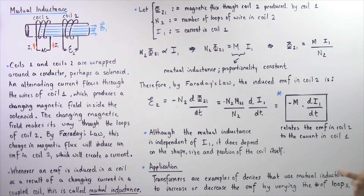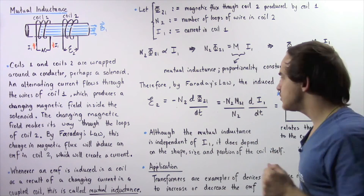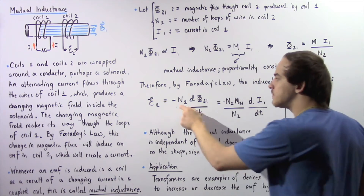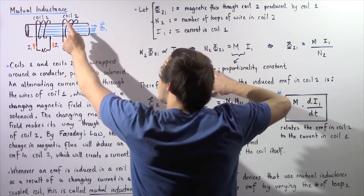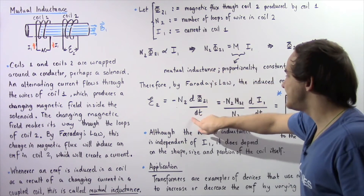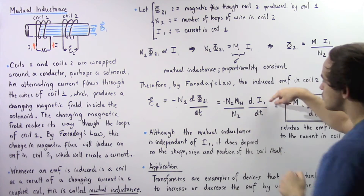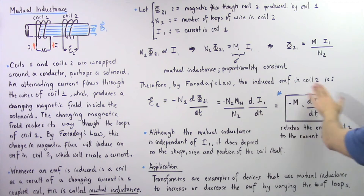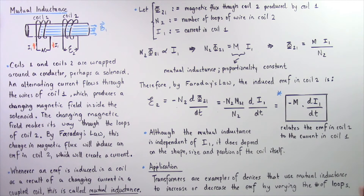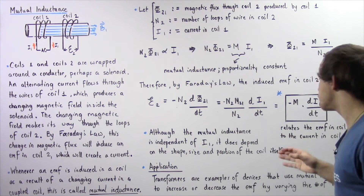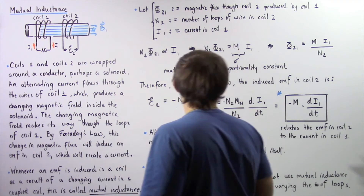By Faraday's law, the induced EMF in coil two is equal to the negative of the product of the number of loops in coil two multiplied by the rate of change of magnetic flux in coil two due to coil one — that is, negative N2 times d(Phi-2-1)/dt. Substituting our expression for Phi-2-1 and cancelling N2 from the numerator and denominator, we find that the induced EMF in coil two equals the negative of the mutual inductance M multiplied by the rate of change of electric current in coil number one, i.e., negative M times dI-1/dt.